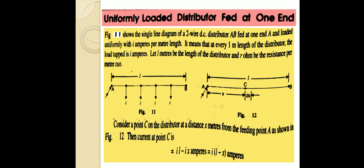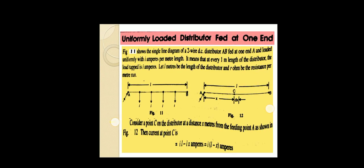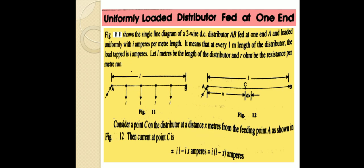The distributor AB is fed at a single end and its length is L. The resistance of distributor AB is R ohm. Consider a point C on the distributor at a distance of x meters from the feeding point A. The current at point C is equal to IL minus Ix amperes, that is I(L minus x) amperes.